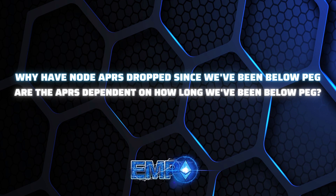The nodes that are emitting EMP — that's EMP that's already in the ecosystem, produced through the boardroom over the last six months of the protocol. That's a really fundamental difference. The question was: I'm in nodes, I understand about nodes, but why does the APR continue to go down? The APR is only going down because we are below peg.